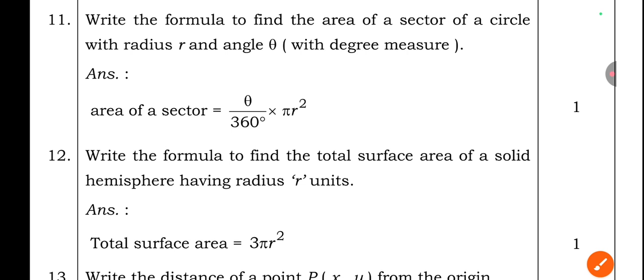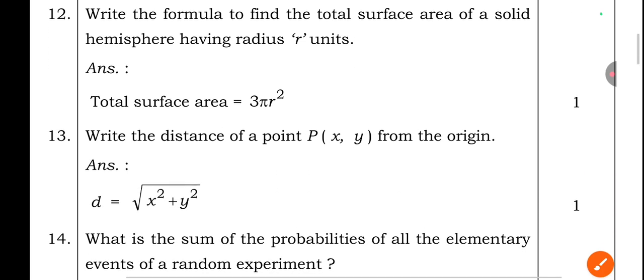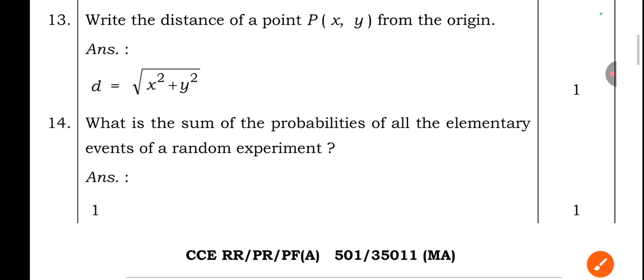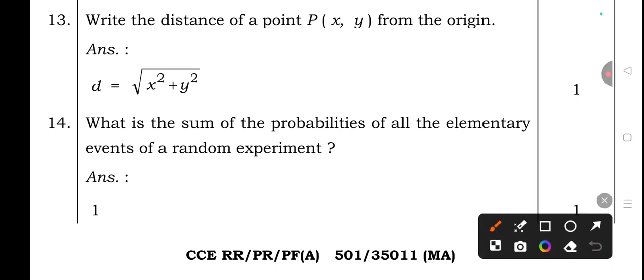Question 11: Write the formula to find the area of a sector of a circle with radius r and angle θ (in degrees). Area of sector = (θ/360°) × πr². Question 12: Total surface area of a solid hemisphere with radius r = 3πr². Question 13: Distance of point P(x, y) from the origin: d = √(x² + y²).